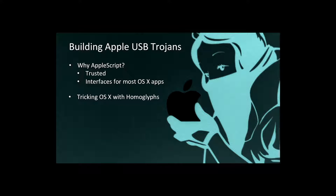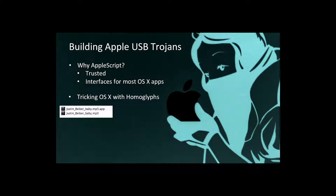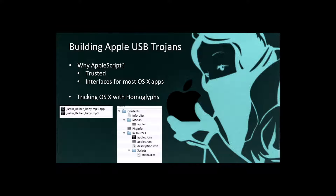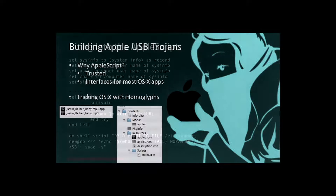There was one trick I did with OSX using homoglyphs — a character that looks like another character. There's a protection in OSX where if you try to disguise a file as something other than a .app, like an .mp3, it will automatically throw a .app at the end, giving away your Trojan. However, if you put what's called an Ogonek character — a little Turkish Unicode character that looks very similar to a period — it tricks the OS. Apple doesn't throw the .app on the end, so you can disguise the file as something like 'JustinBeaver.mp3' and modify the icon to use Apple's .mp3 icon.